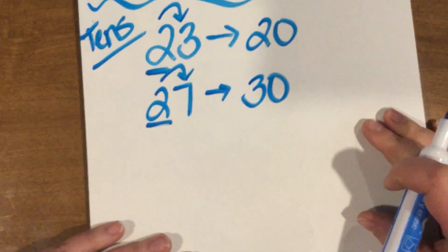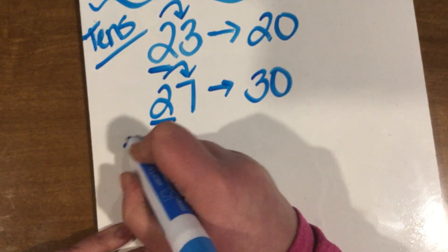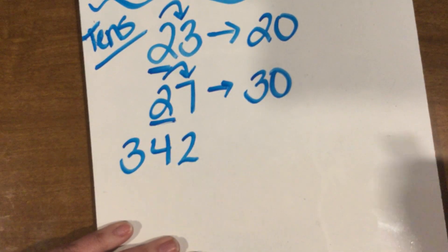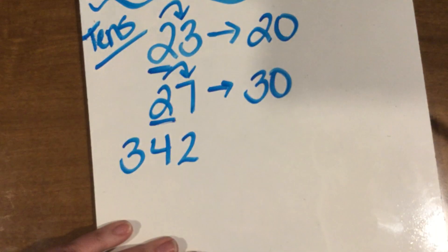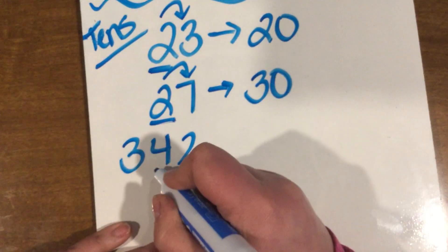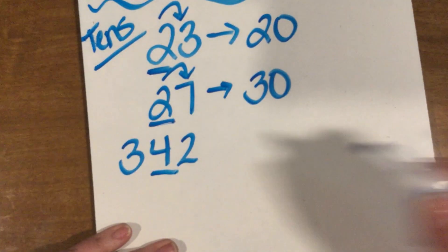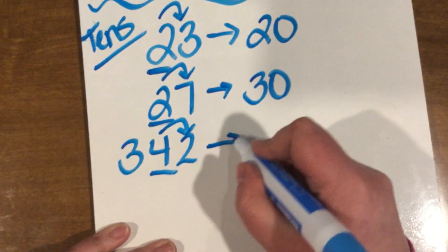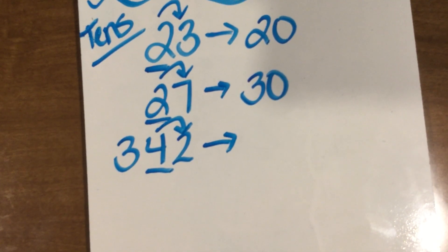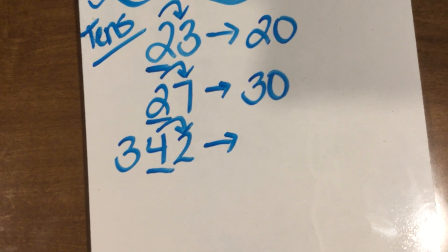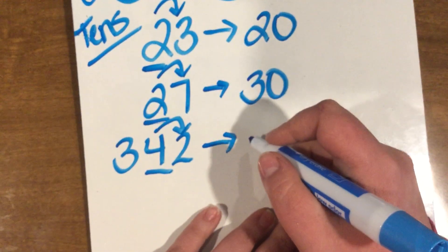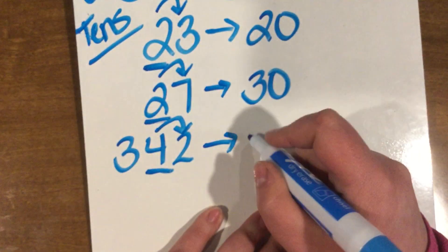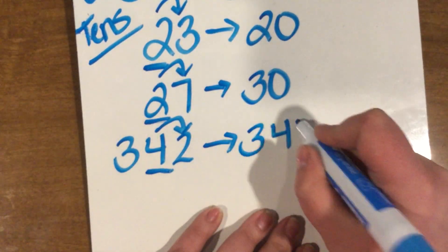Let's try a number with a hundreds place — three hundred and forty-two. We're going to round to our tens place. So I'm going to underline my tens place and look right next door. Is two four or less, or five or more? Two is four or less, right? So we're going to round that down to the ten that's already there — three hundred and forty.